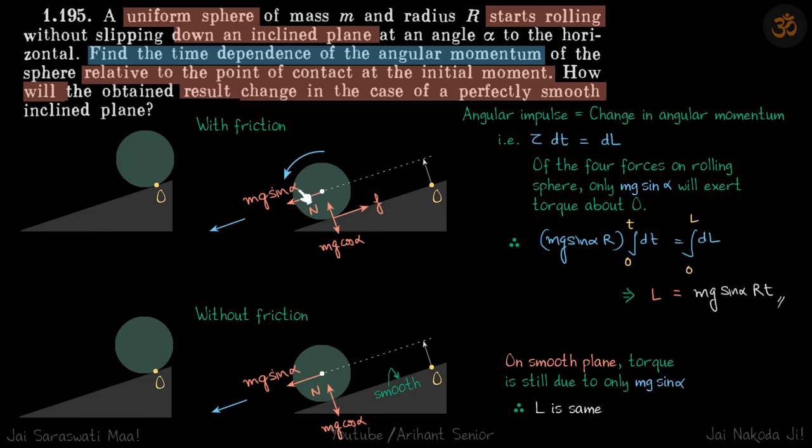Let's write all the forces on this sphere. Friction will be backwards, Mg sin alpha will be on the center in the direction of the plane, then we'll have normal reaction and Mg cos alpha. These are all the forces on the sphere.